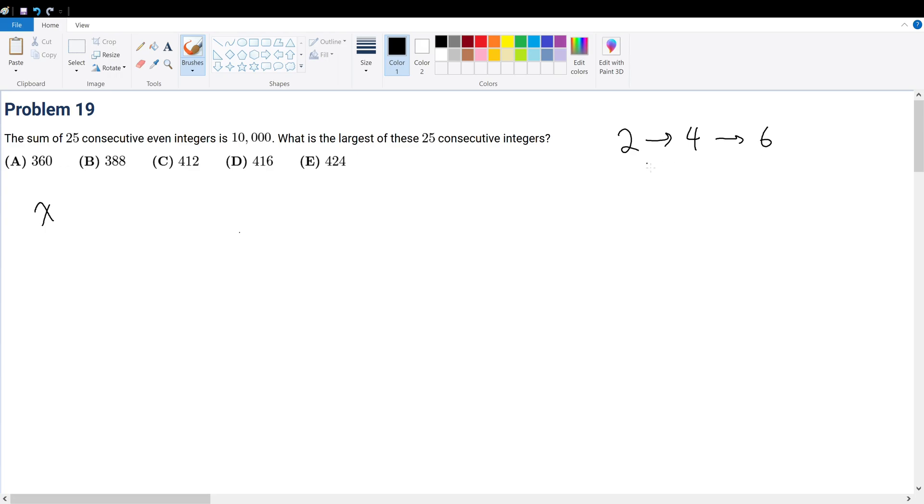So every even number is separated by the next even number by 2. That means you must add this with x plus 2, you must add this with x plus 4, right? Because this must add 2 to get to x plus 4. Then likewise you get x plus 6.